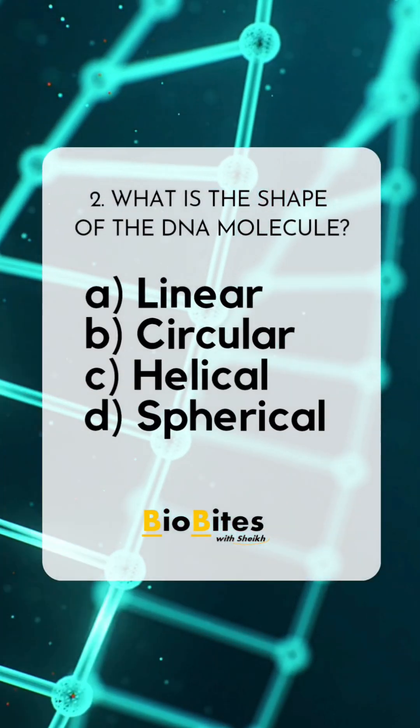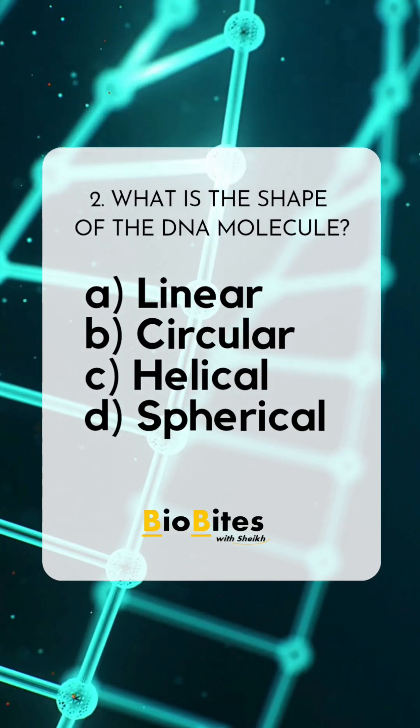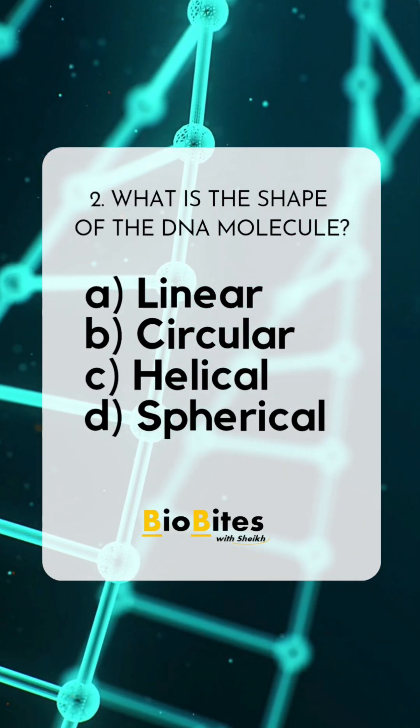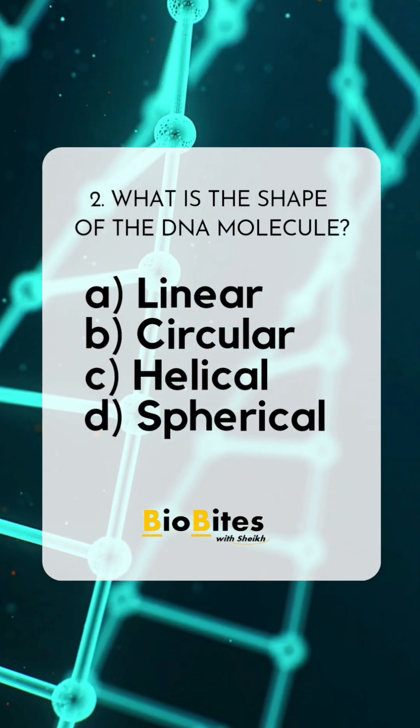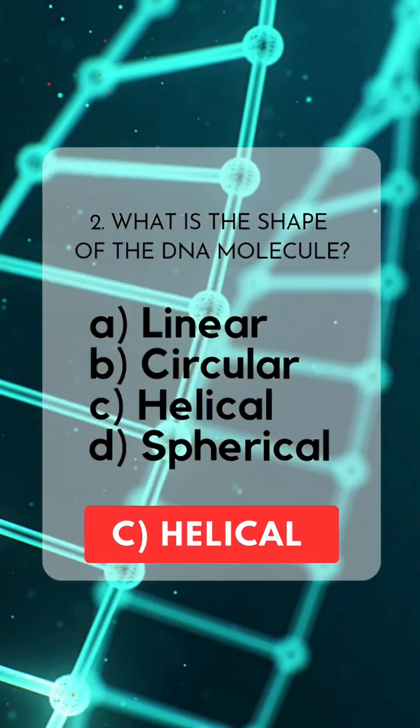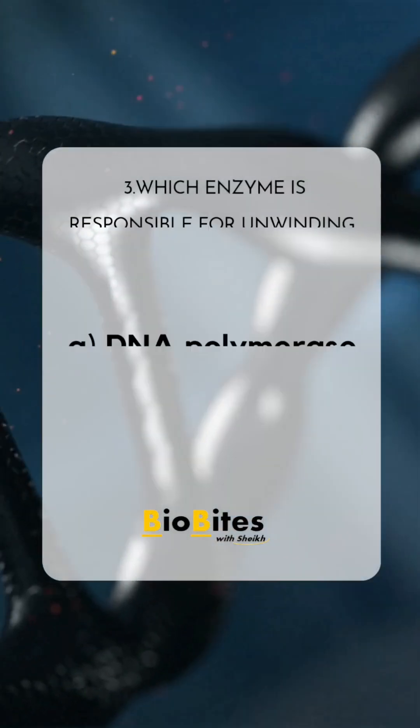What is the shape of the DNA molecule? A. Linear. B. Circular. C. Helical. D. Spherical. Correct answer: C. Helical.